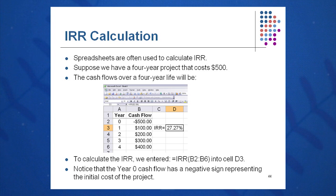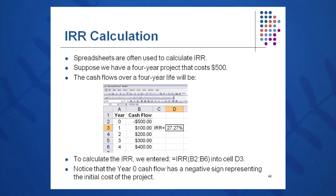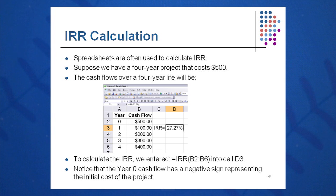How do we do an IRR calculation in Excel? Very simply, we list the cash flows — the negative cash flow first, then the positive cash flows. Off to the side, we enter the built-in Excel function: =IRR(B2:B6). That scans all the cash flows, iterates, does the exact math we just went over, and finds the rate at which NPV equals zero, which in this case is 27.2%. Excel can be a great tool for calculating the internal rate of return very quickly.